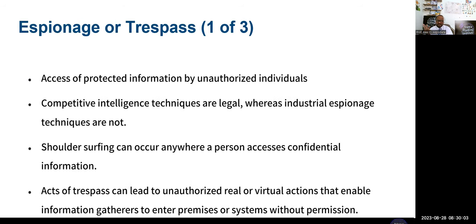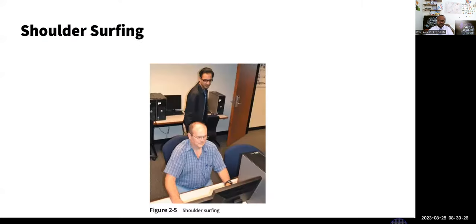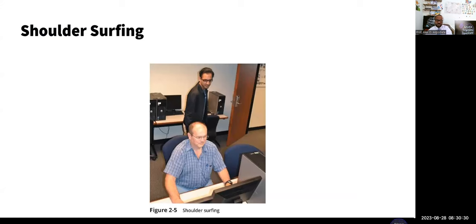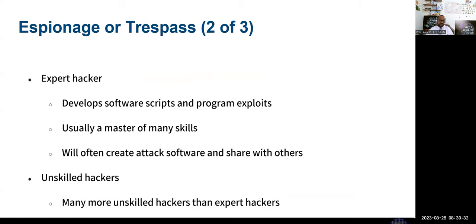Espionage or trespass means somebody wants to get access to information they should not have access to. This could be from an intelligence perspective — using techniques like shoulder surfing, looking over someone's shoulder. The whole idea is that an unauthorized person is getting access to my information. Countermeasures include privacy screens and being aware of your environment.